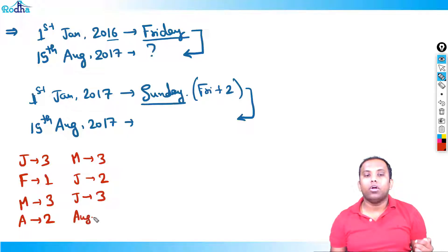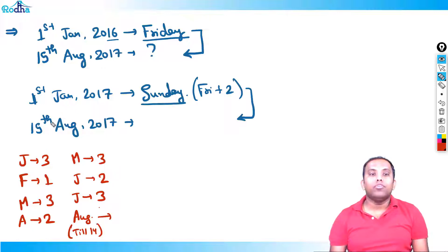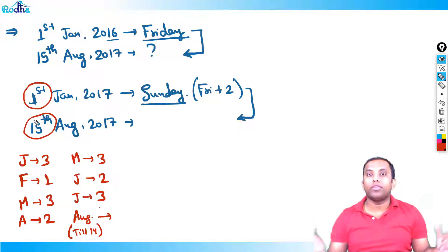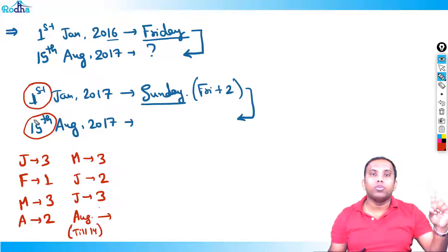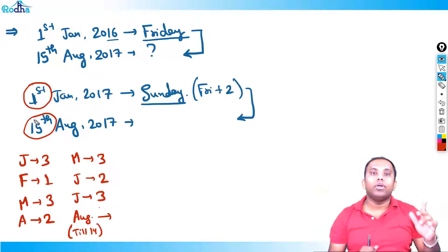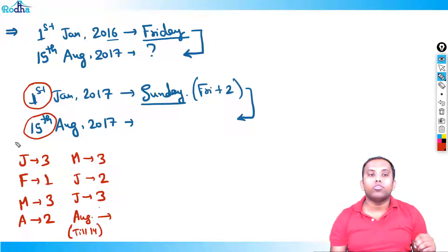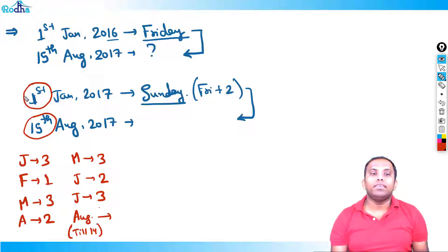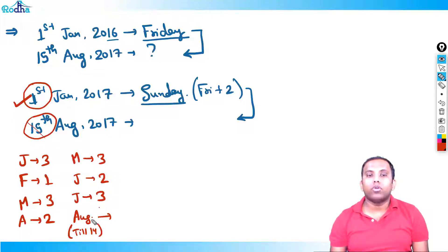In August, we have to take till 14 only, not till 15. Because from 1st Jan to 15th August, we are calculating how many days are in between — difference means one day will be included and the other excluded. Since we started from first and included it, we should not include the 15th. So August only till 14 days — 14 by 7 remainder is 0 — zero odd days.